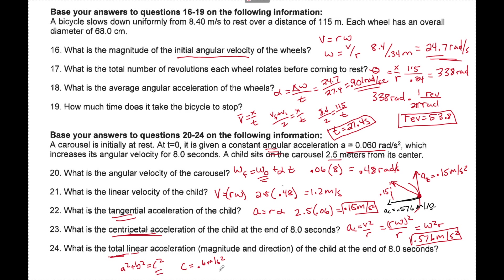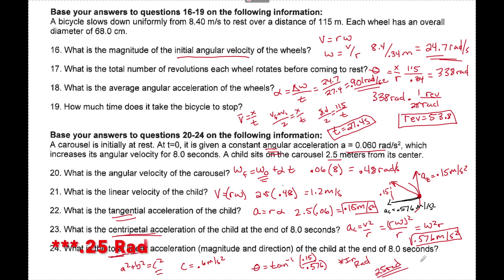They also need the angle theta. Using opposite over adjacent, theta equals inverse tan of 0.15 divided by 0.576, with the calculator in radians, giving 25 radians. That's it, guys — I hope that helped. If you have any additional questions, leave them in the comments below.